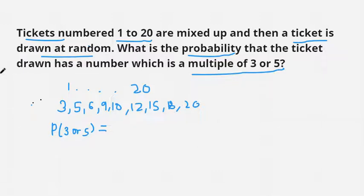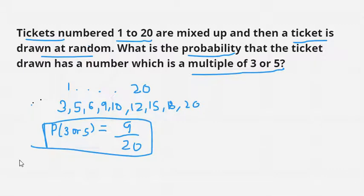There are 9 favorable events - you can count them: 1, 2, 3, 4, 5, 6, 7, 8, 9. The total outcome, which will be your total possible events, will be 20 (1 to 20). So this is our final number: 9 upon 20. So 9/20 is the probability that a drawn number has a number which is a multiple of either 3 or 5.